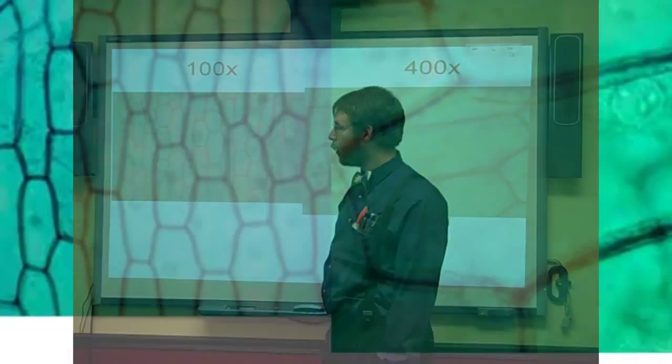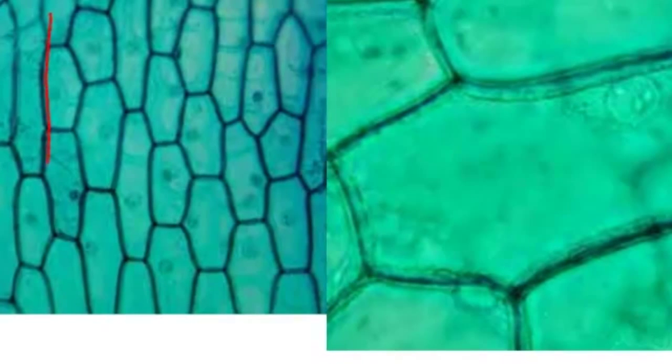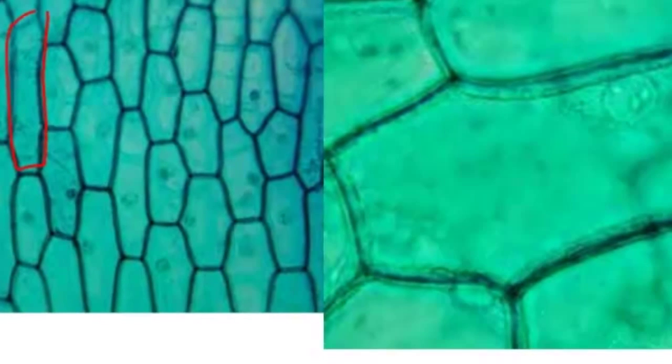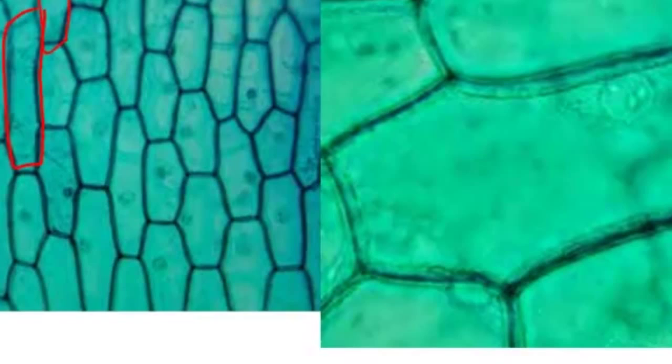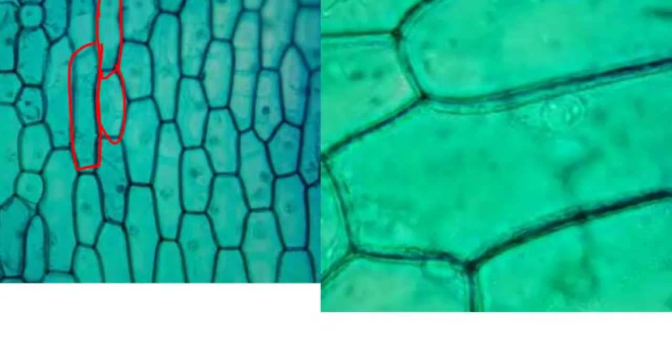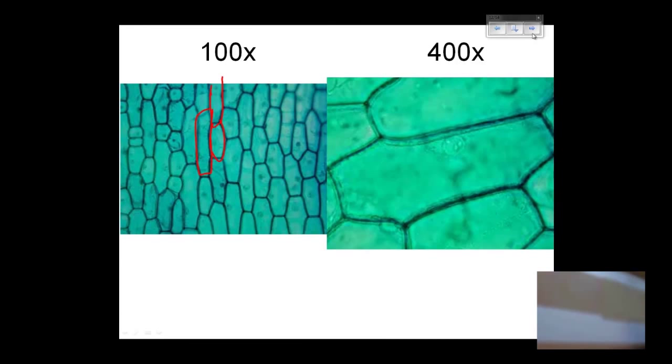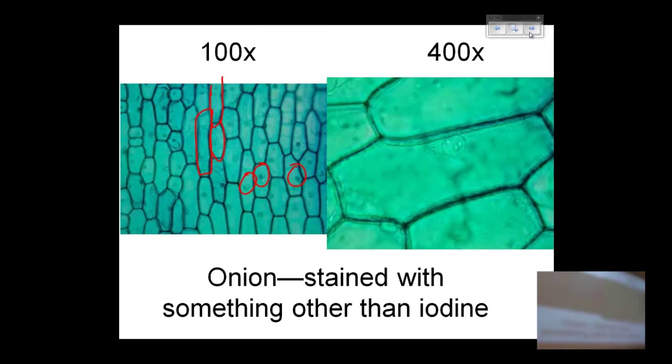Here's 100 times and 400 times with the onion cell. Notice that routine structure, almost got like a subway pattern. Here we are zoomed in on 400 times. This is stained. We're going to stain it with iodine, which really lets you see the nucleus. You need that very nice detail here. You need to show me the nuclei in your drawings. Very important.